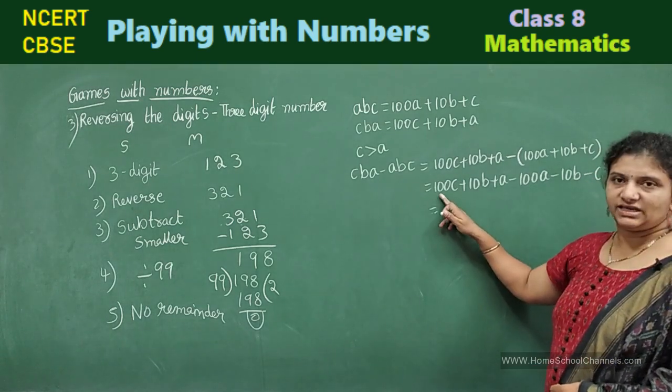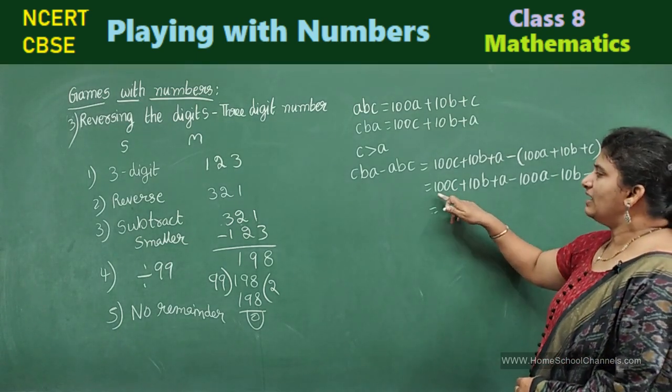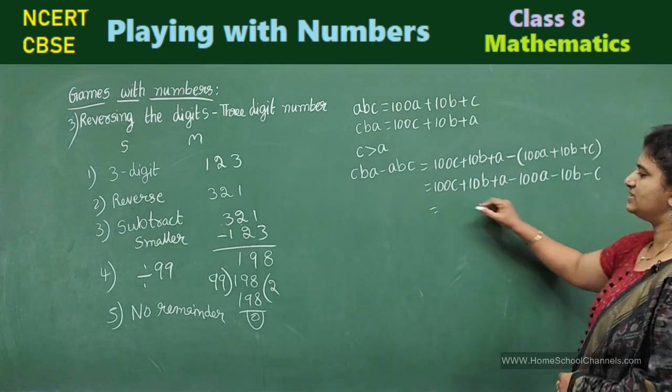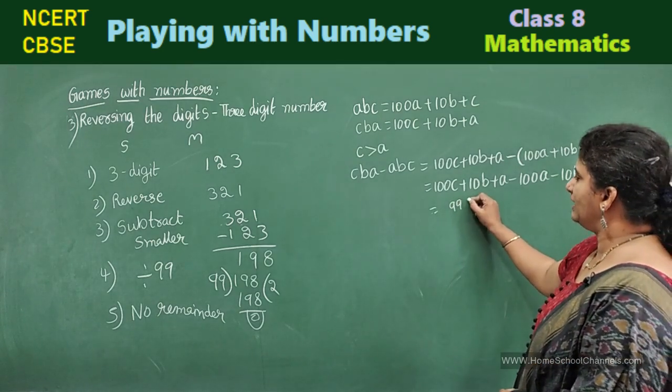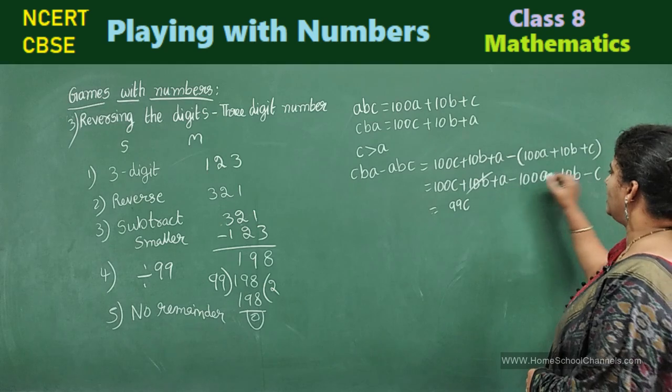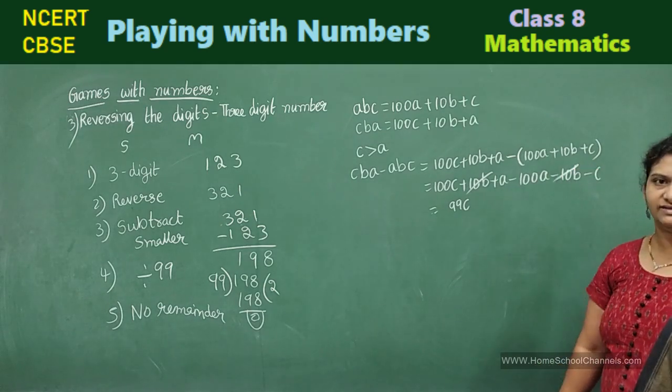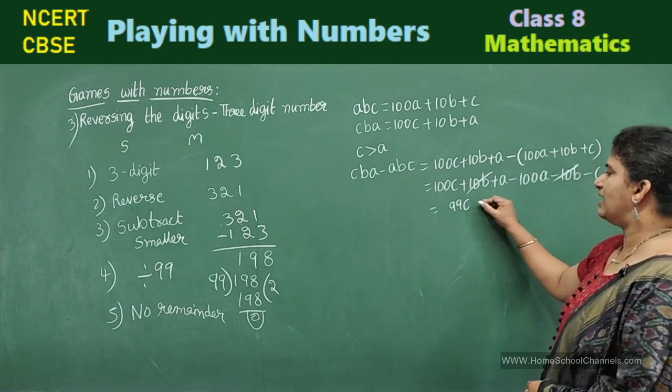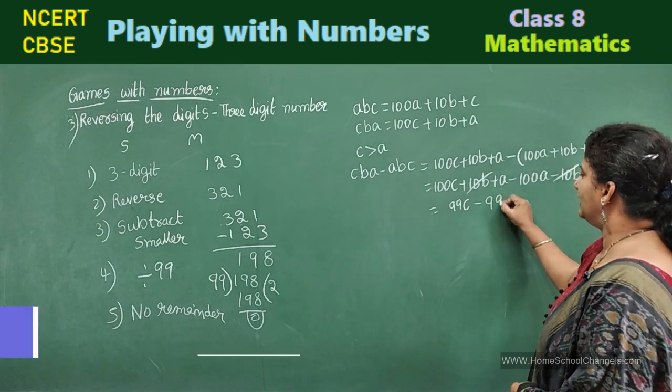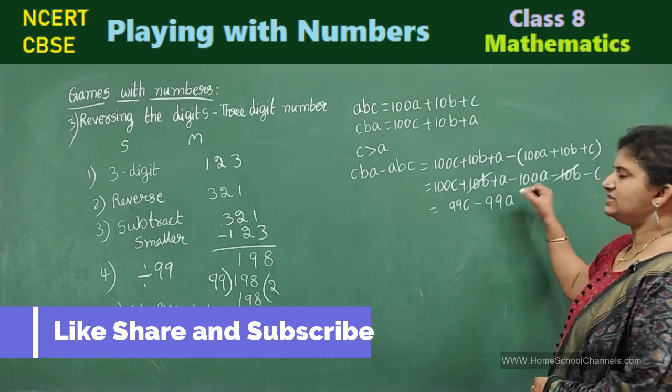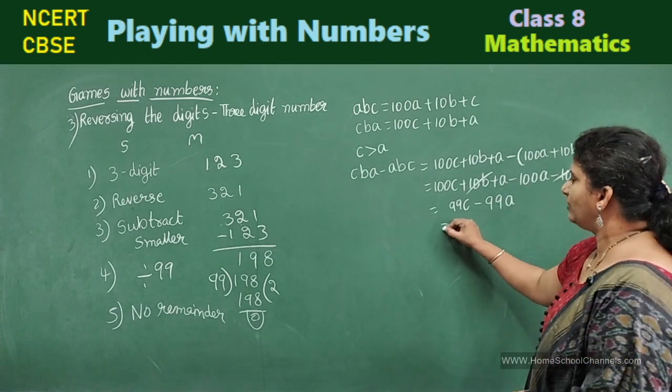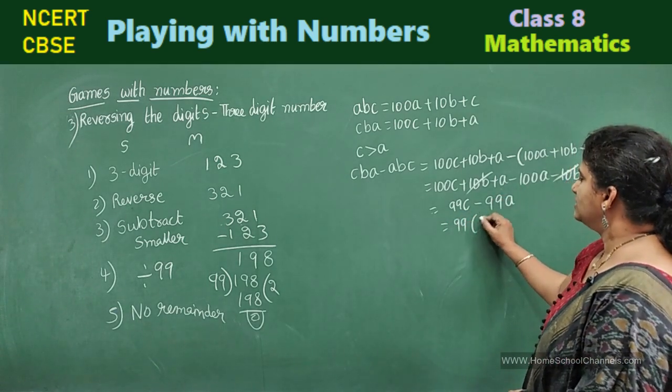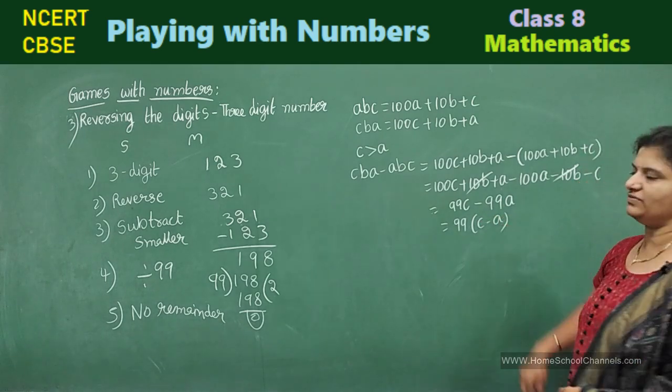Now, remove from brackets. It's 100C plus 10B plus A minus 100A minus 10B minus C. So, now, let us see. Start from here. 100C minus C. 99C and 10B minus 10B cancel. Or 10 minus 10 will be 0. Next, A minus 100A. It will be minus 99A. Now, take out 99 common. C minus A. You are left.